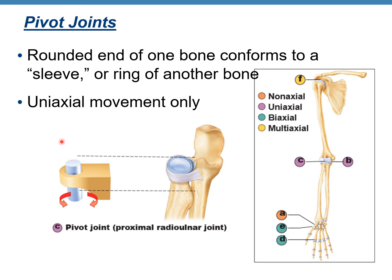Pivot joints occur when the rounded end of one bone conforms to a sleeve or ring of another bone. It's a uniaxial movement. An example is the radioulnar joint — the radius has a rounded end that fits in the radial notch of the ulna — reinforced by a ligament. It allows uniaxial movement along a vertical axis.